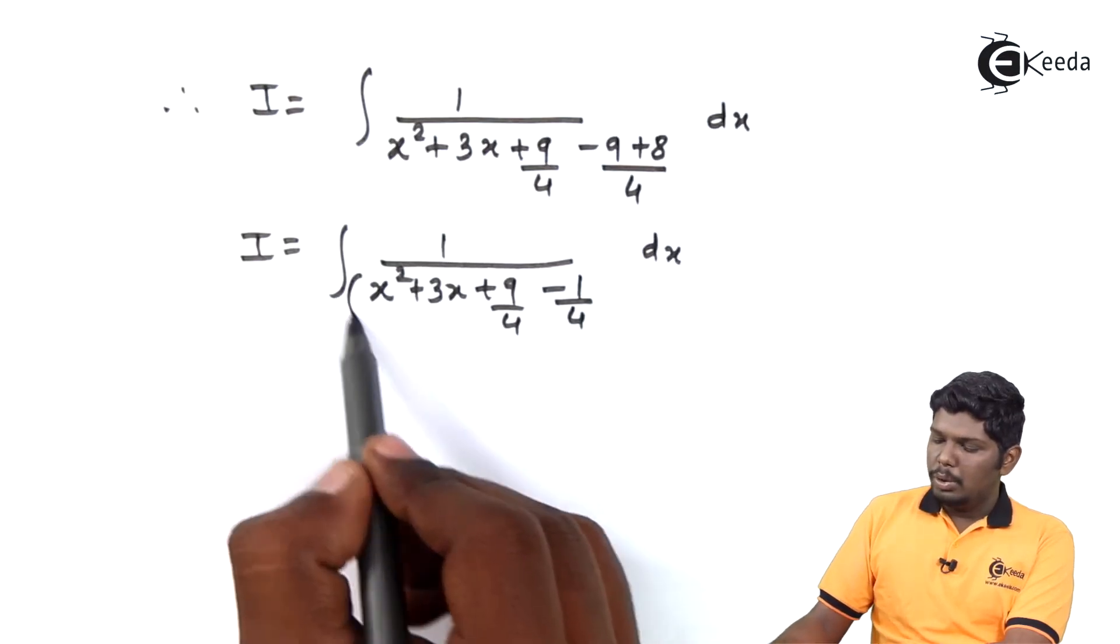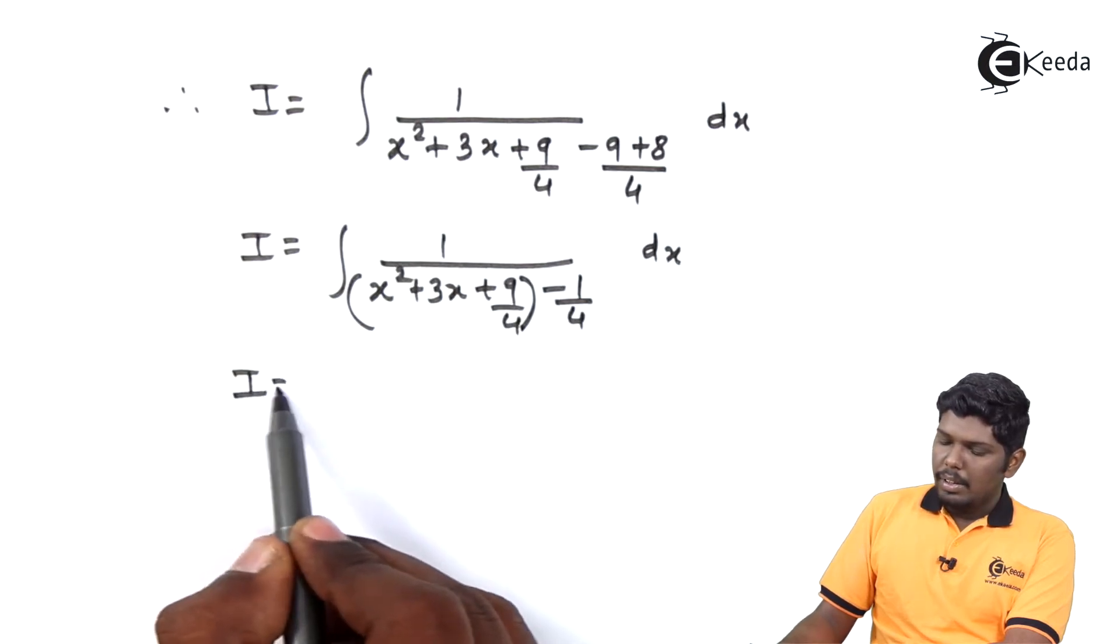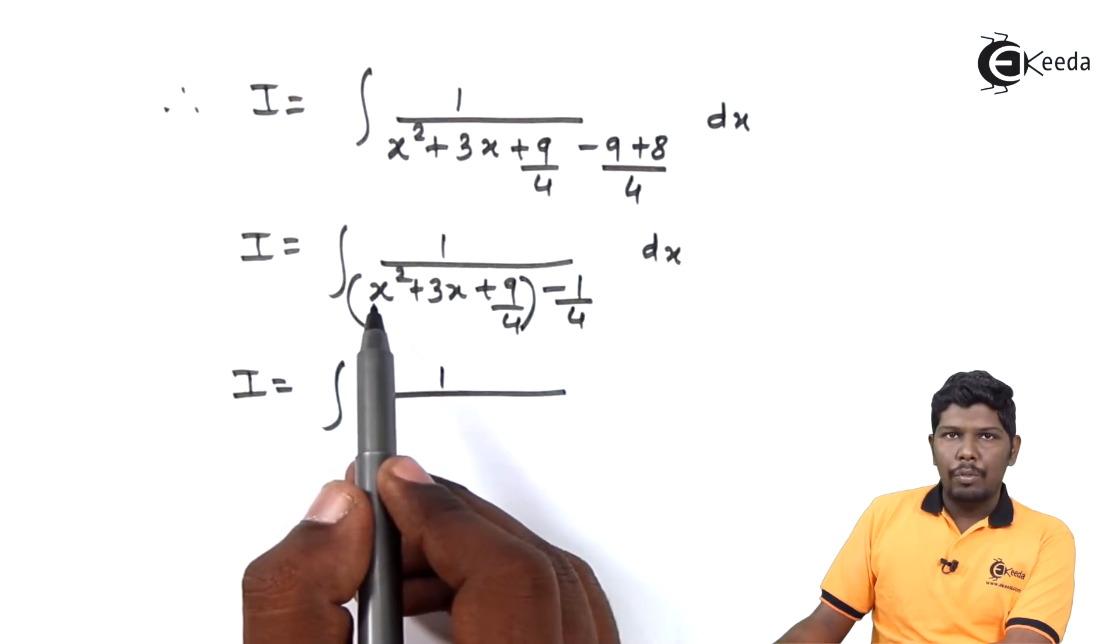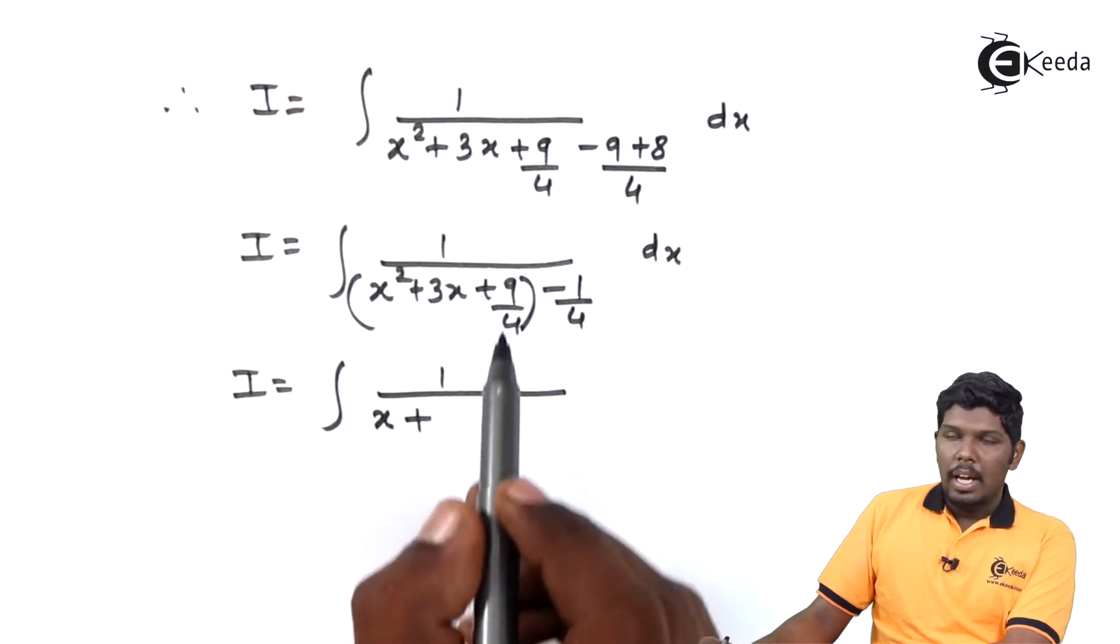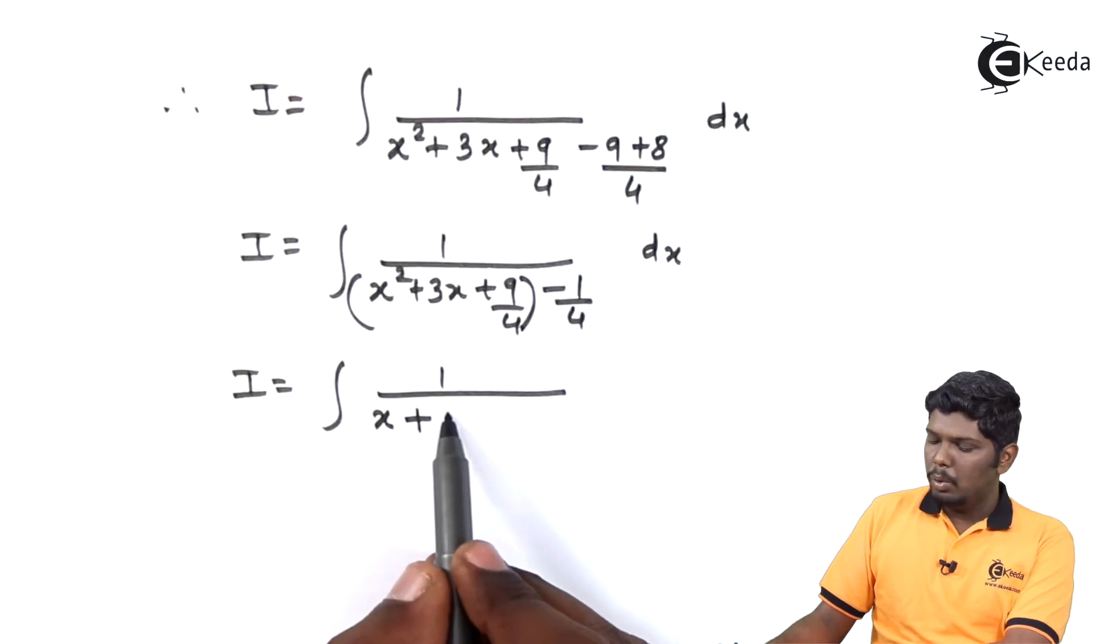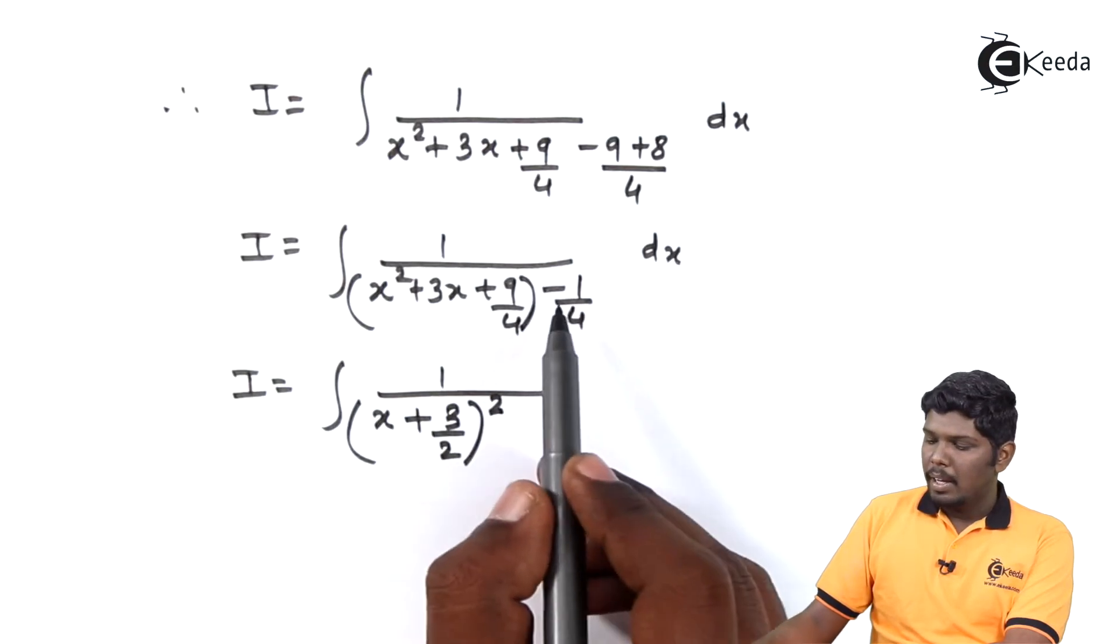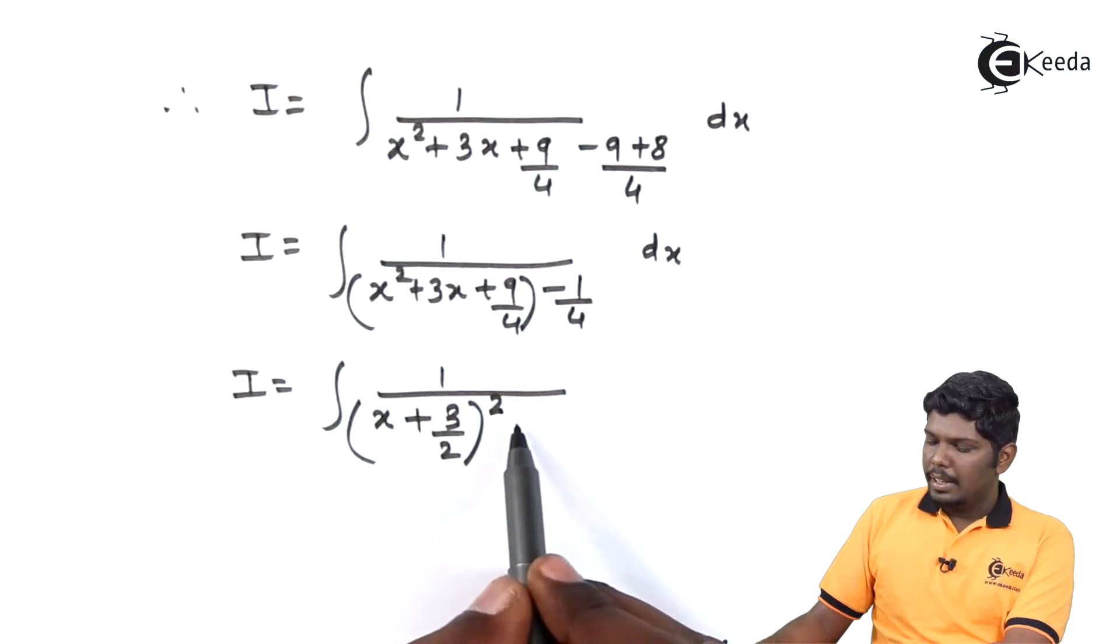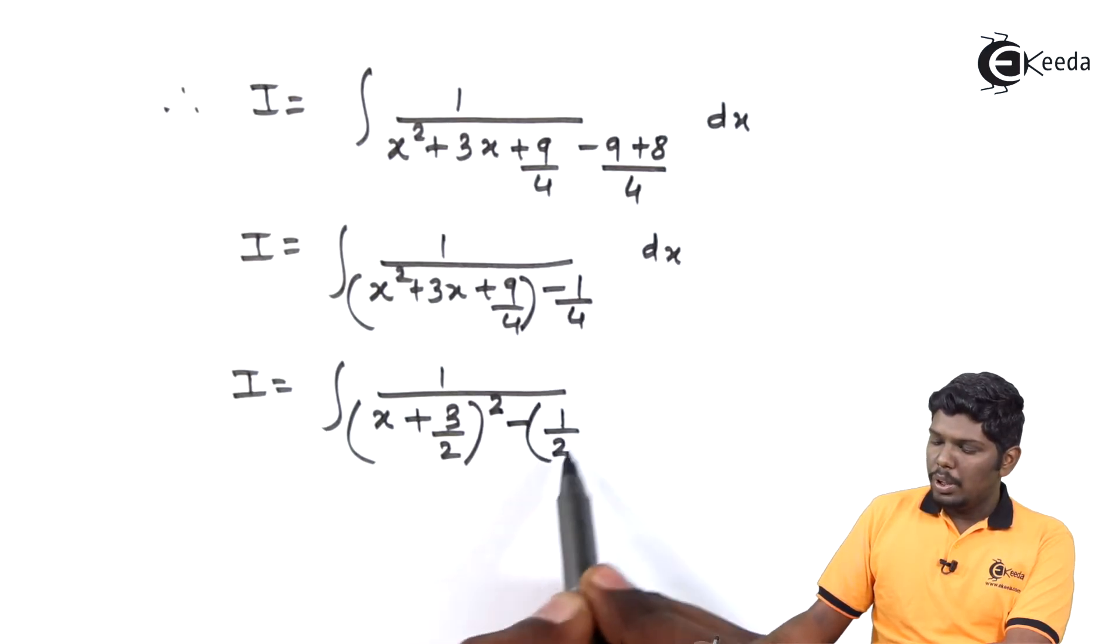In the next step we will reduce these three terms. 1 upon - for that we need to take the square root of first term, that is x, followed by sign of second term, that is plus, and again the square root of third term. Square root of 9 by 4 will give you 3 upon 2. And at last we will write the whole square. And the second constant needs to be arranged in something square. That is 1 upon 4 can be written as 1 upon 2 the whole square.